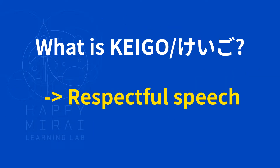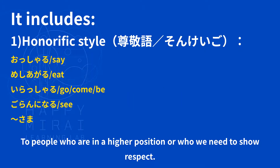So here is keigo — 敬語 (keigo) means respectful speech. We use it to respect someone. There are different types. First: honorific style — 尊敬語 (sonkeigo). This is mainly used for people who are in a much higher position, or someone you need to really show your respect to. There are certain verbs, nouns, or adjectives which already belong to honorific style.